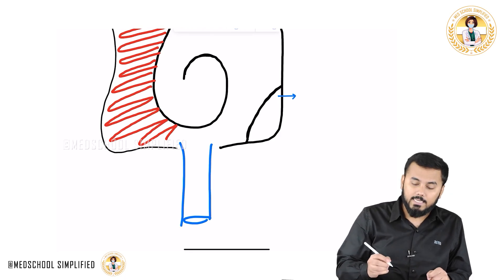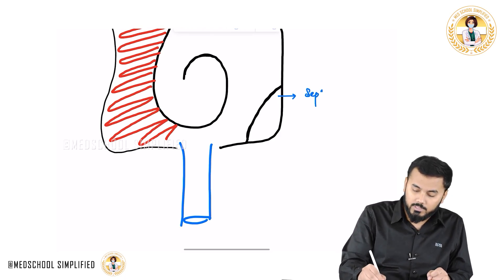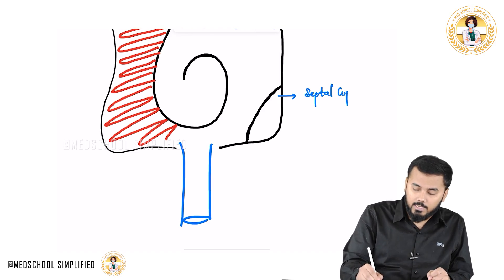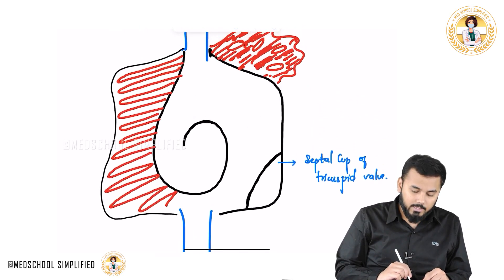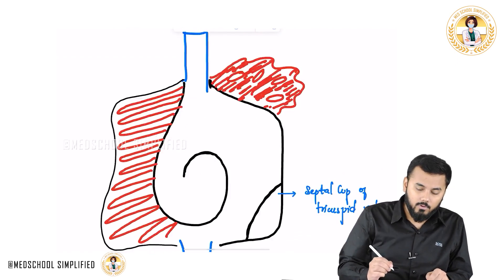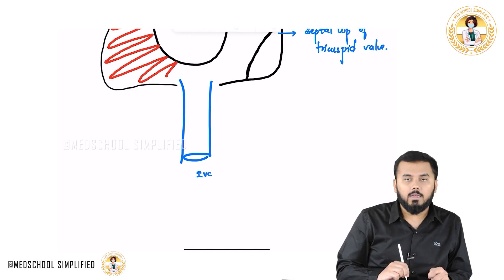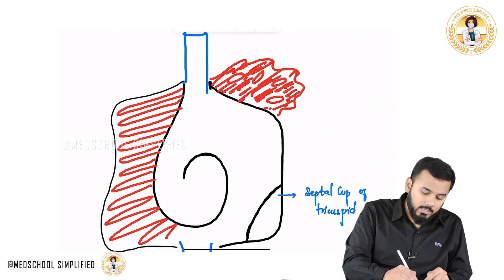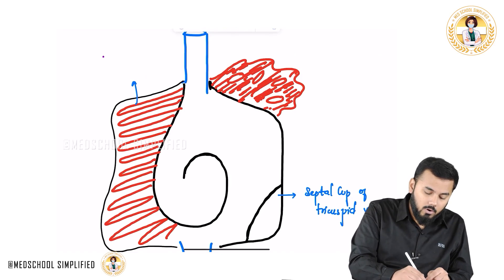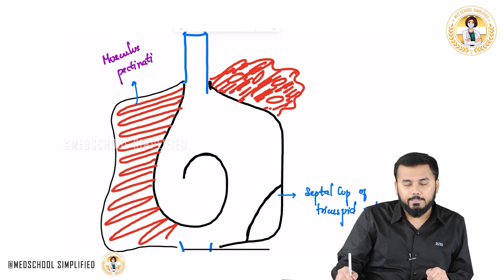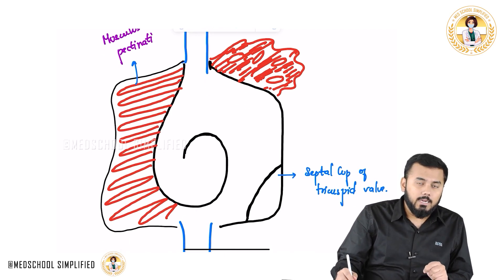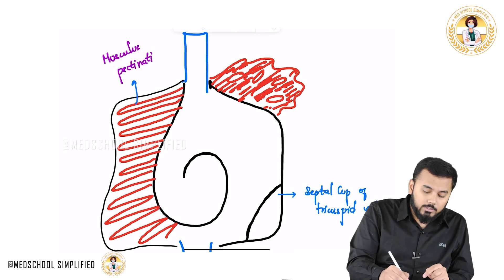This part over here is called as the septal cusp of the tricuspid valve. You have the superior vena cava over here and the inferior vena cava, and you have seen the muscles over here. These muscles are called as pectinate muscles or musculi pectinati.